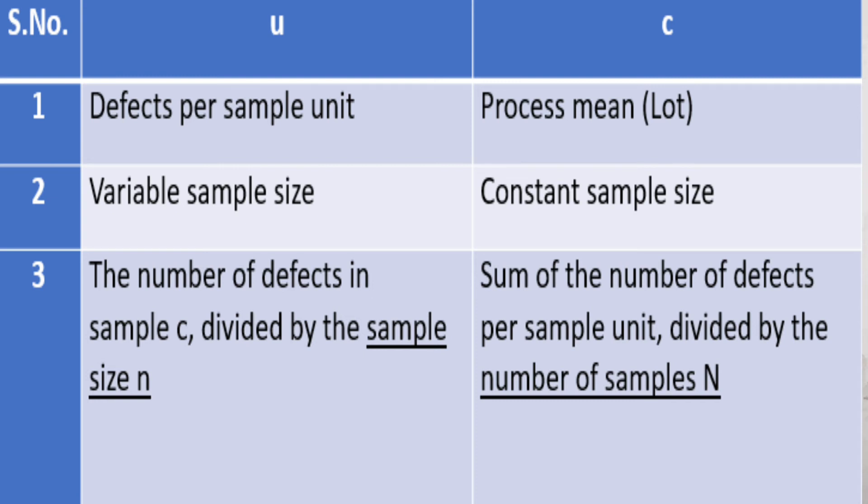When we are talking about U chart, if we talk about the definition, it is number of defects in sample C divided by the sample size. When we talk about C chart, it is sum of number of defects per sample unit divided by the number of samples.